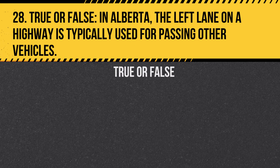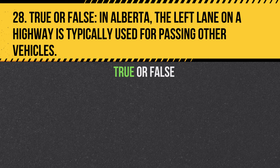Question 28. True or false: In Alberta, the left lane on a highway is typically used for passing other vehicles. Answer: True. The left lane is usually for passing on highways, while the right lane is for regular travel.